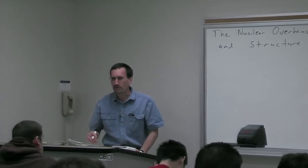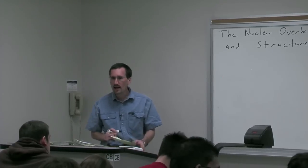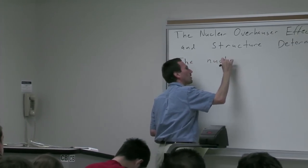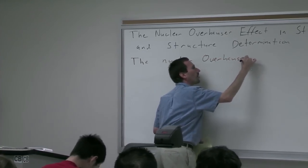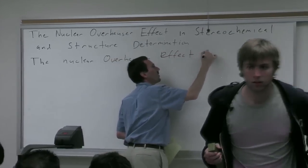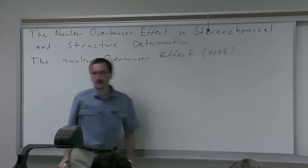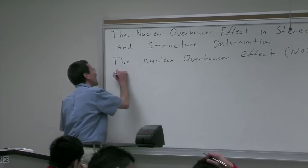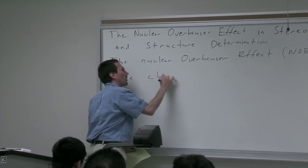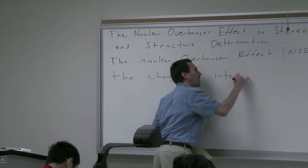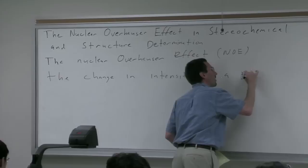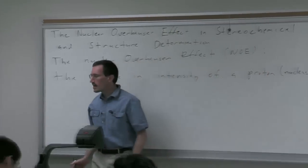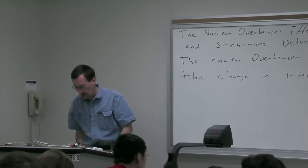In terms of what the nuclear Overhauser effect is, I've been talking about this in C13 NMR but not why it is useful. The NOE is a change in the intensity of the resonance of a proton or another nucleus — I'll put this in terms of protons — in response to or upon irradiation of a nearby proton.